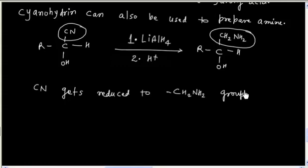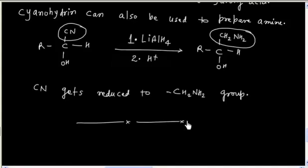In this lecture we discussed cyanohydrin formation. This reaction is a nucleophilic addition reaction in which CN⁻ acts as a nucleophile and the second step is protonation. CN⁻ is generated by a mixture of HCN and NaOH, or HCN with a salt like NaCN or KCN. Finally, cyanohydrin can be hydrolyzed to give an acid or reduced to give an amine.